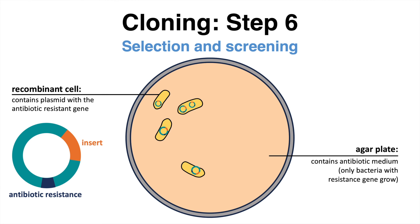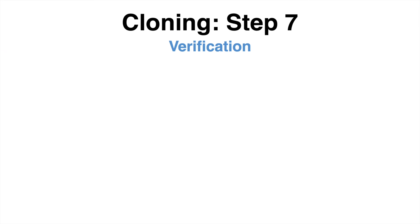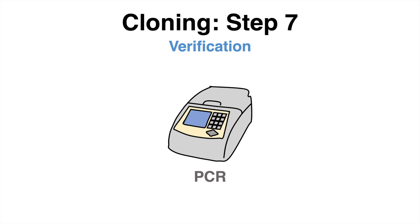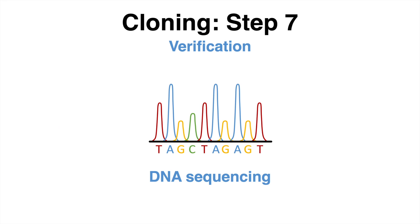Because the presence of the antibiotic resistance gene alone does not guarantee that the recombinant DNA molecule has been assembled as desired, scientists proceed to verify the presence and integrity of the cloned DNA fragment. Techniques such as polymerase chain reaction and DNA sequencing aid in ensuring accuracy. By comparing the sequence of the cloned fragment with known sequences, scientists can confirm the success of the cloning process.